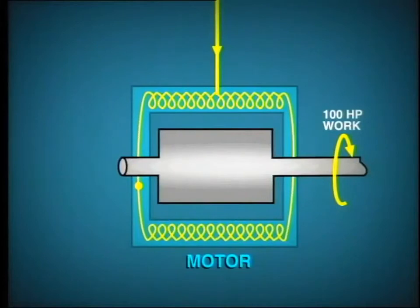For example, let's look at an electric motor. The shaft on the motor rotates to drive a machine and produce useful work, let's say 100 horsepower. The motor will need to draw about 75 kilowatts in order to produce this power output.